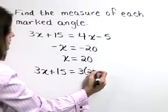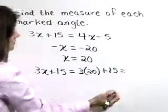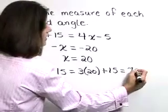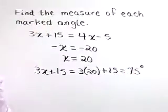We have 3 times 20 plus 15, that's 60 plus 15, or 75. 75 degrees.